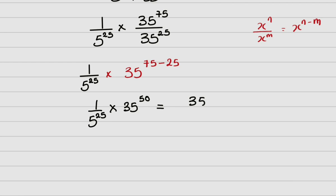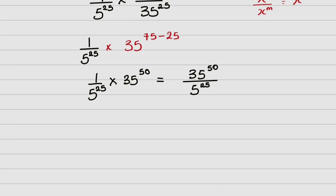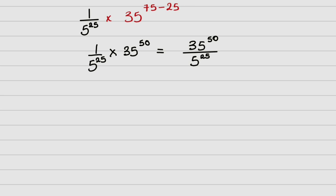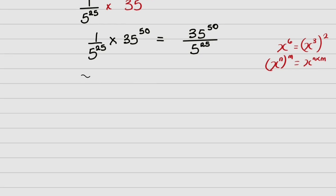Now I can do some further simplification. Do you know that x raised to power 6 can be written as (x raised to power 3) raised to power 2? This uses the law: x raised to power n raised to power m equals x raised to power (n times m). So I'm going to rewrite 35 raised to power 50 as 35 raised to power (25 times 2), all over 5 raised to power 25.